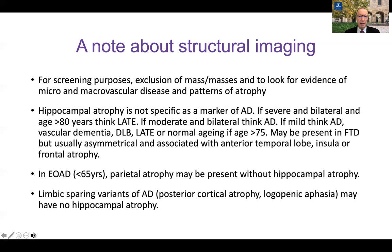In frontotemporal dementia, atrophy tends to be more anterior, affecting the amygdala more than the hippocampus. In early onset Alzheimer's disease — onset before 65 — parietal atrophy may be present without hippocampal atrophy. In the limbic sparing variants of Alzheimer's disease, which are atypical presentations with language or visuoconstructional problems, patients may have no hippocampal atrophy on MRI. By limbic I'm referring to the hippocampus and posterior cingulate type circuit important for memory function.